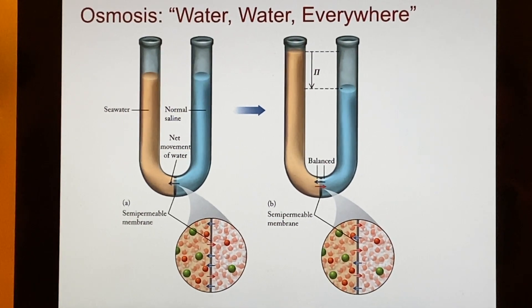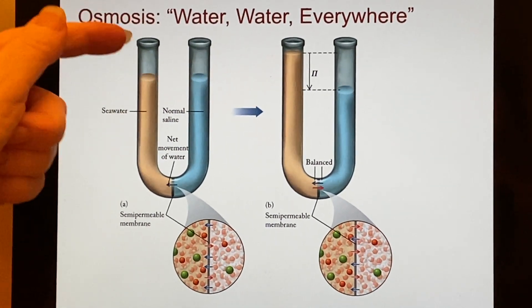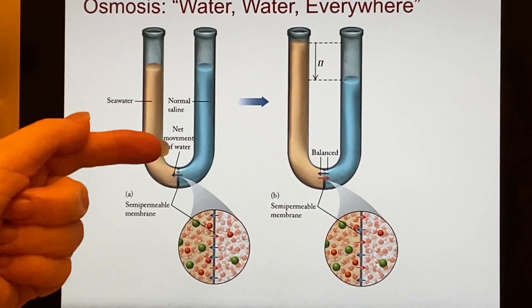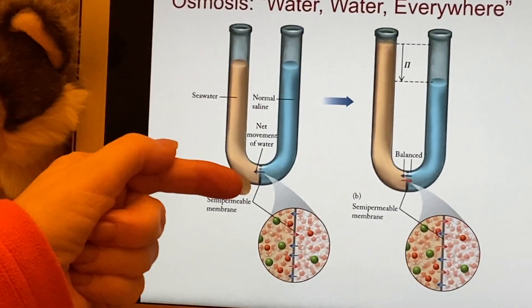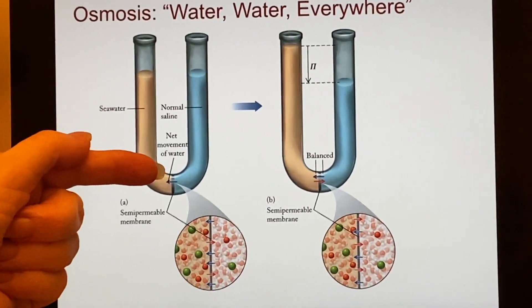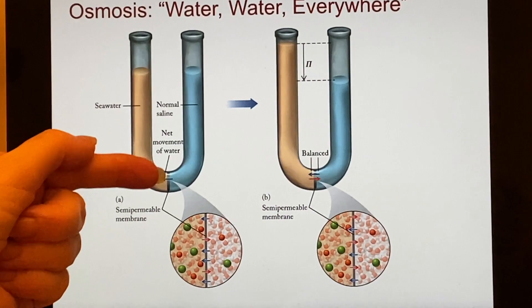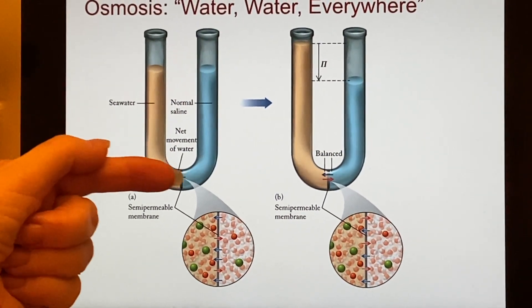Where do we see this in chemistry? We might see a situation where we're doing an experiment where we have this semipermeable membrane down here at the bottom that would allow the flow of water but not any of the dissolved materials.